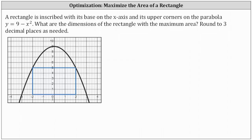Looking at the graph below, the black parabola is given by y equals 9 minus x squared. Notice how I've shown one rectangle where the base is along the x-axis and the upper corners are on the parabola.